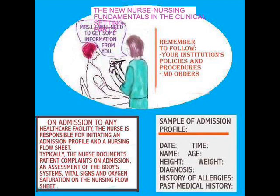We also ask patients questions about their height and weight, age, and what was the main complaint that brought them to the hospital in the first place, past medical history, and allergies. We also find out who is responsible for decision making, since some patients may have a guardian or a durable power of attorney. Your facility usually has the process set to go.